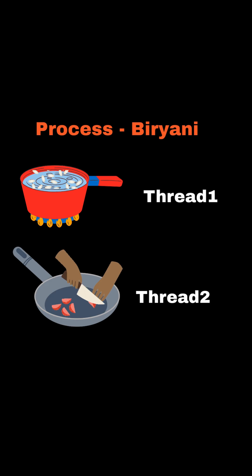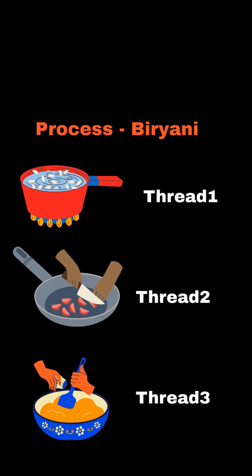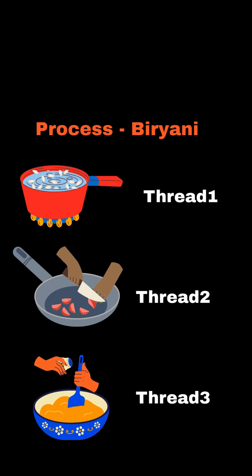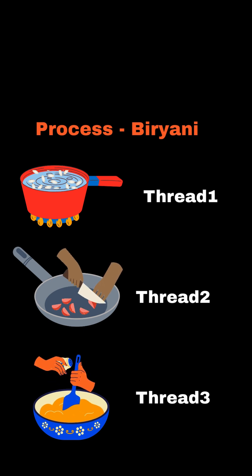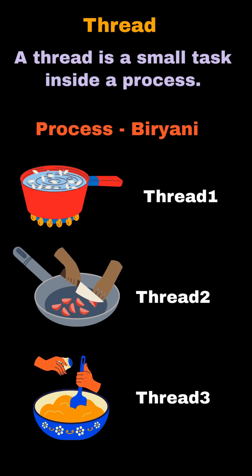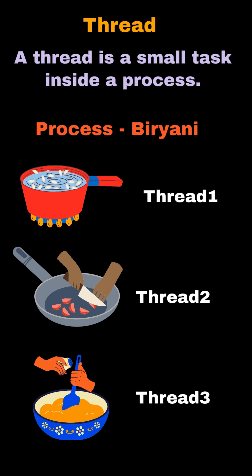Now, when you prepare biryani, is it done in one step? No. First, we boil rice, then fry onions, then prepare masala. Each of these — boil rice, fry onions, prepare masala — is one thread. A thread is a small task inside a process.